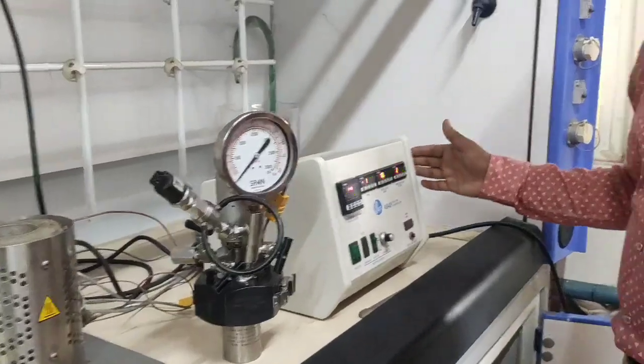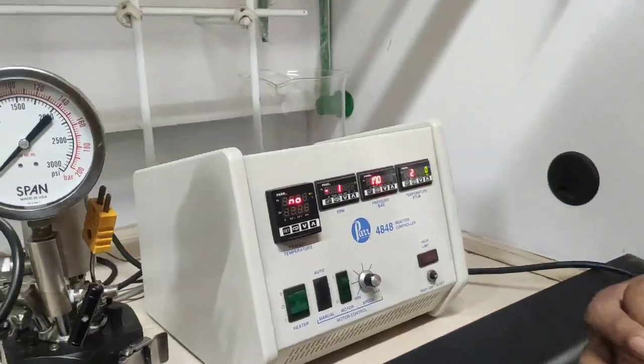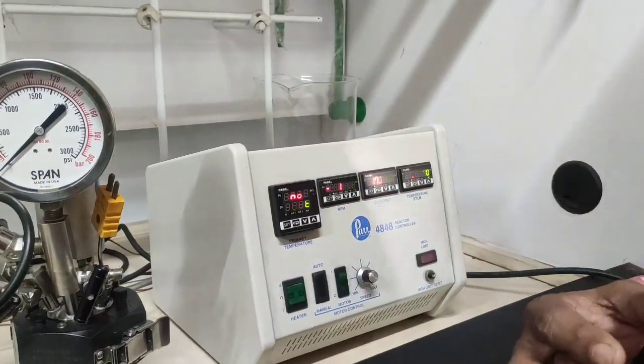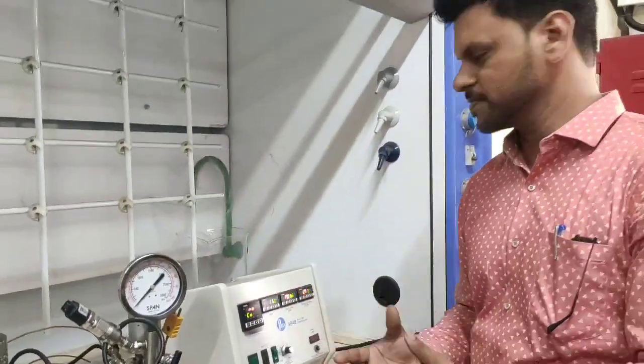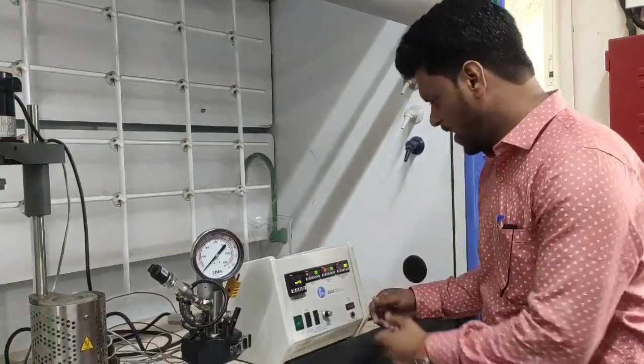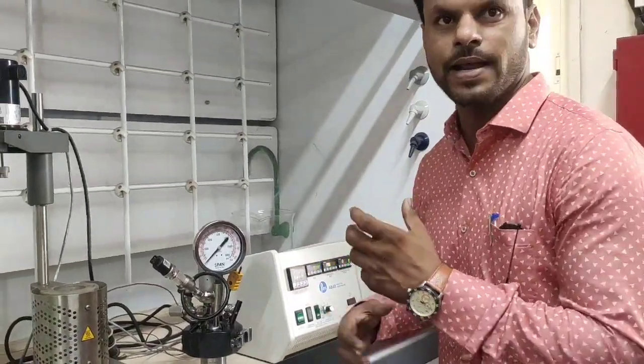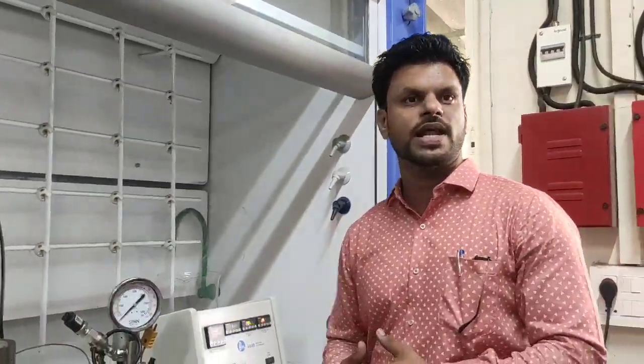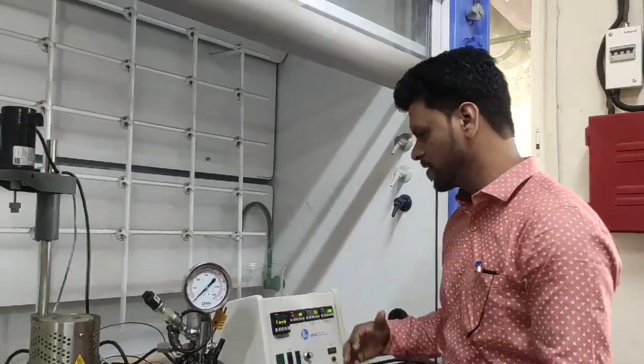And this is called the controller. With the help of the controller, if you wanted to reach the temperature like 200 degree Celsius, I can give the command to the controller and we can also fix the ramping rate. With the ramping rate it will reach the desired temperature.